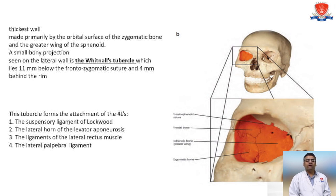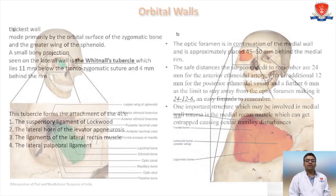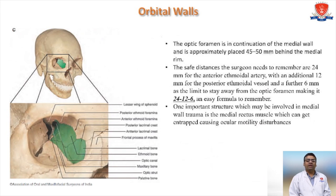For the medial orbital wall, the optic foramen is in continuation of the medial wall and is approximately 40 to 50 mm behind the medial orbital rim. The safe distances the surgeon needs to remember are 24 mm for the anterior ethmoidal artery, with an additional 12 mm for the posterior ethmoidal vessel, and a further 6 mm as the limit to stay away from the optic nerve — making it 24-12-6 as an easy formula to remember. One important structure which may be involved in medial wall trauma is the medial rectus muscle, which can get entrapped causing ocular motility disturbances.